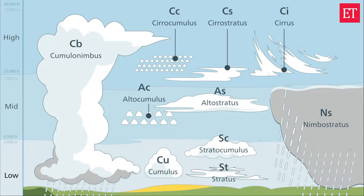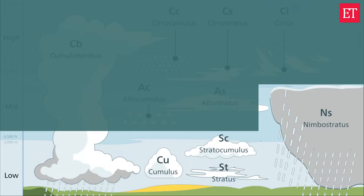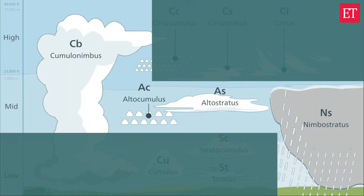We can classify clouds into three categories. The first type are called low formation clouds — clouds situated close to the ground, typically below 2,000 meters in altitude. This type can consist of stratus clouds. Secondly, there are middle formation clouds, situated at a moderate altitude of 2,000 to 6,000 meters above ground level. Examples of middle clouds include altocumulus and altostratus clouds.